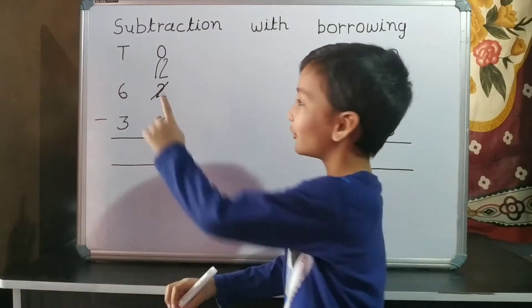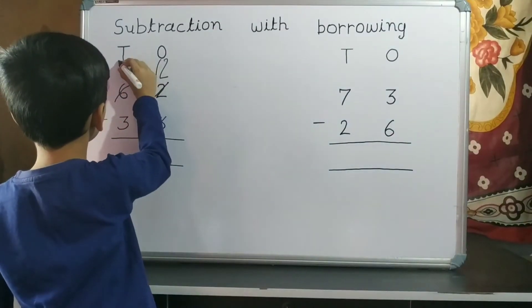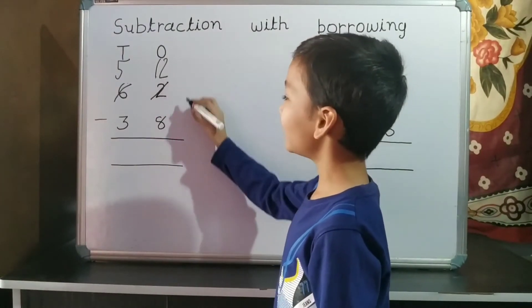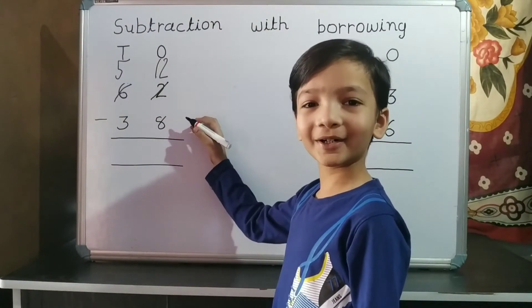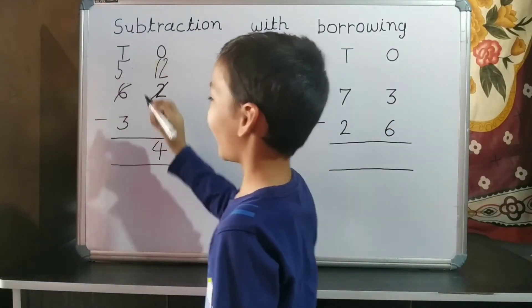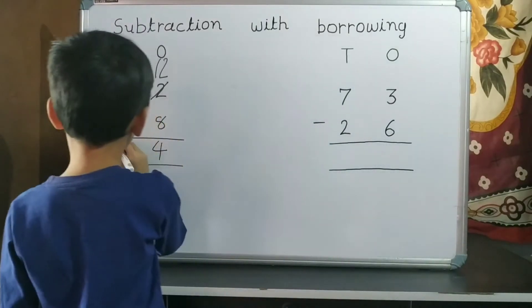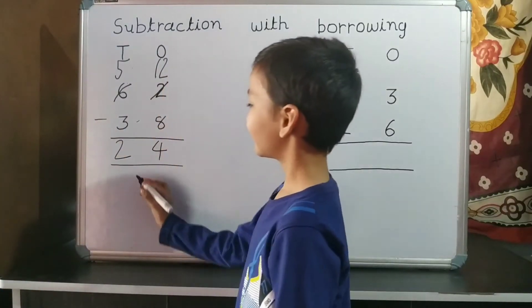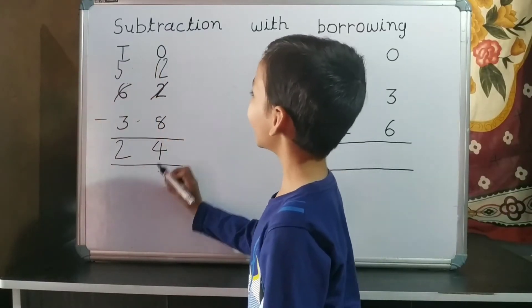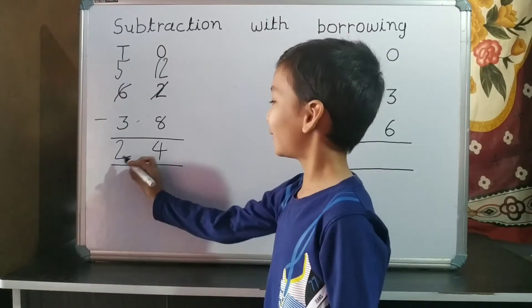Now 6 becomes 5. 12 minus 8 equals 4. 5 minus 3 equals 2. 2 is on 10's place, 4 is on 1's place, so our answer is 24.